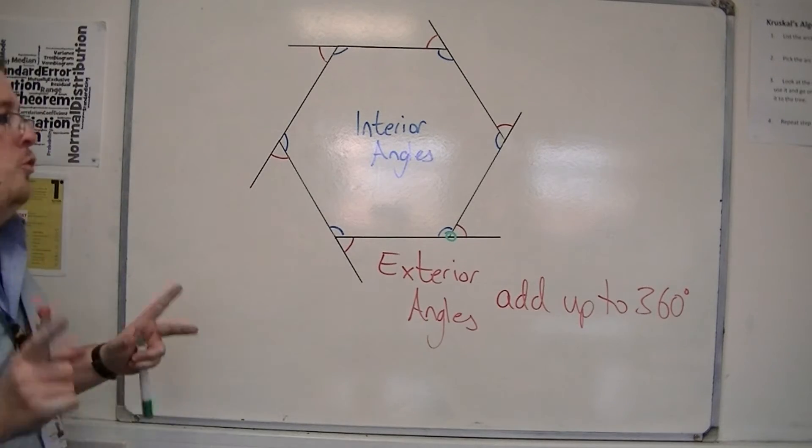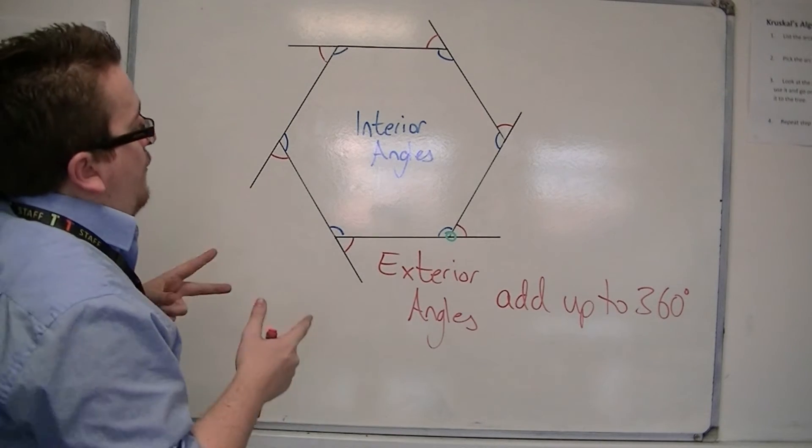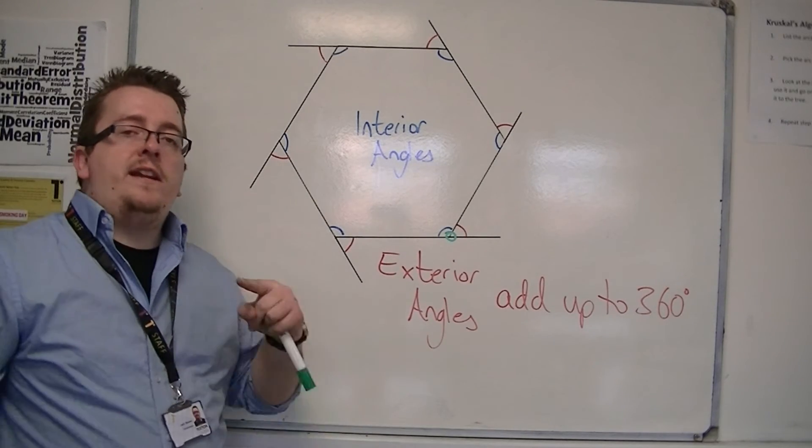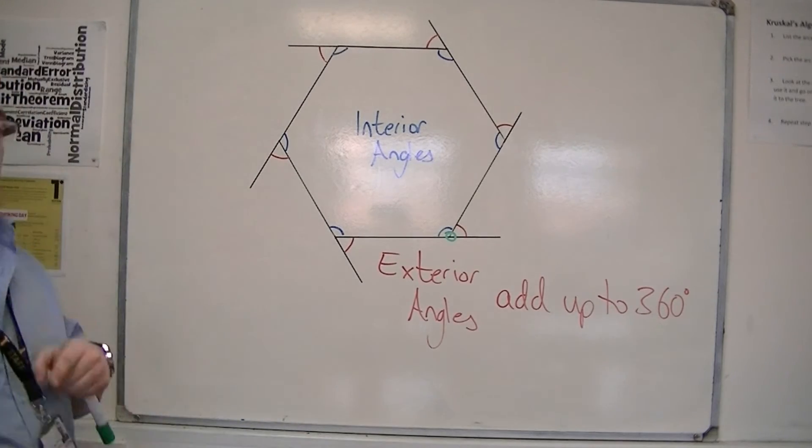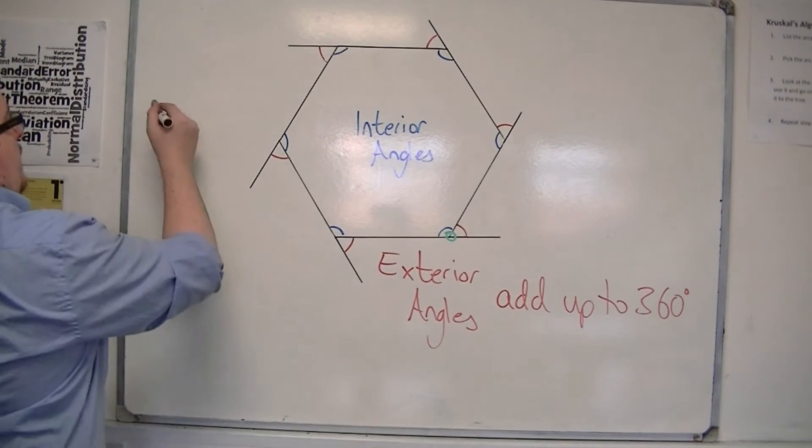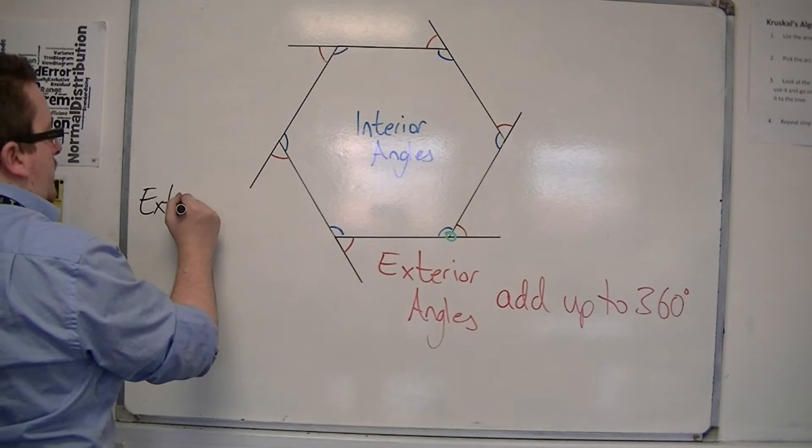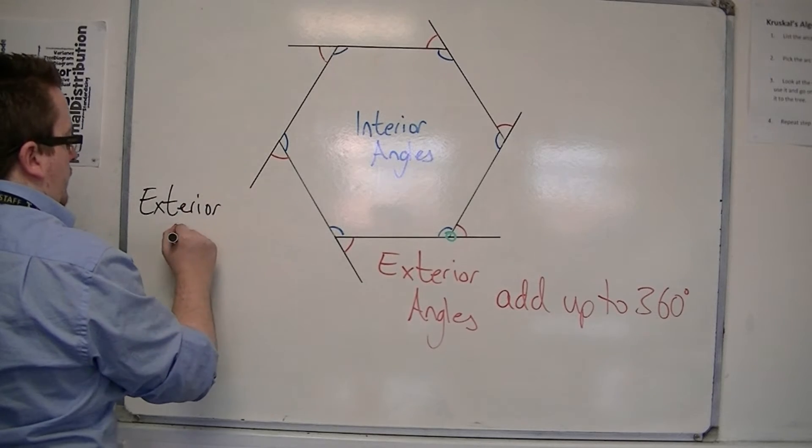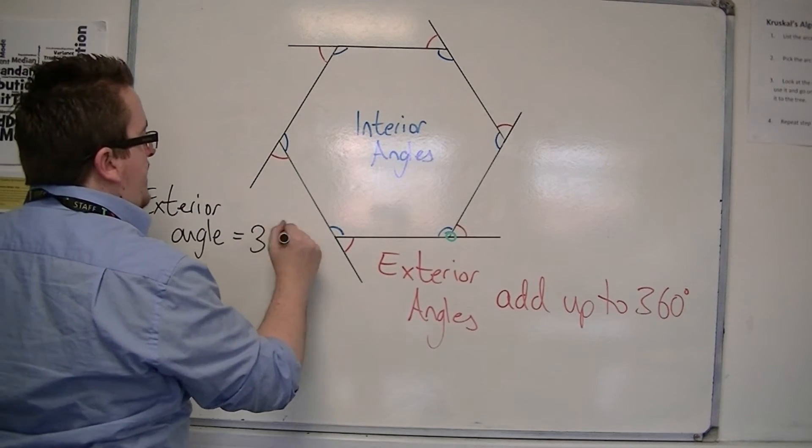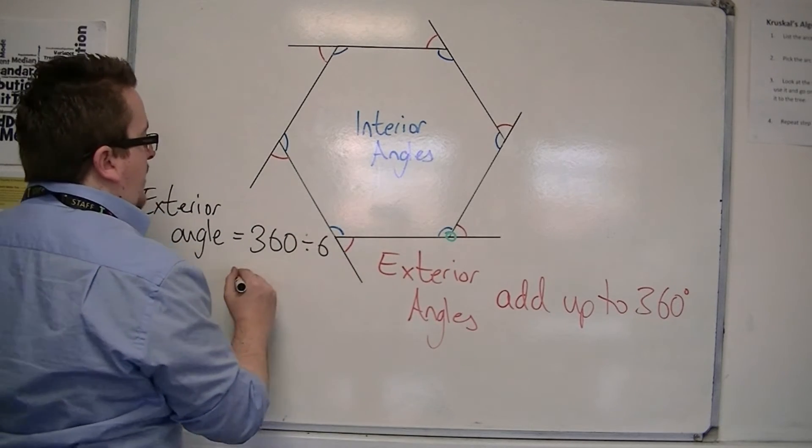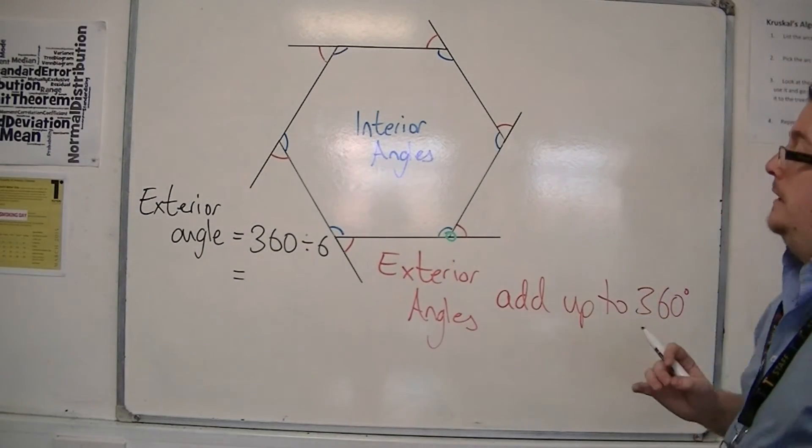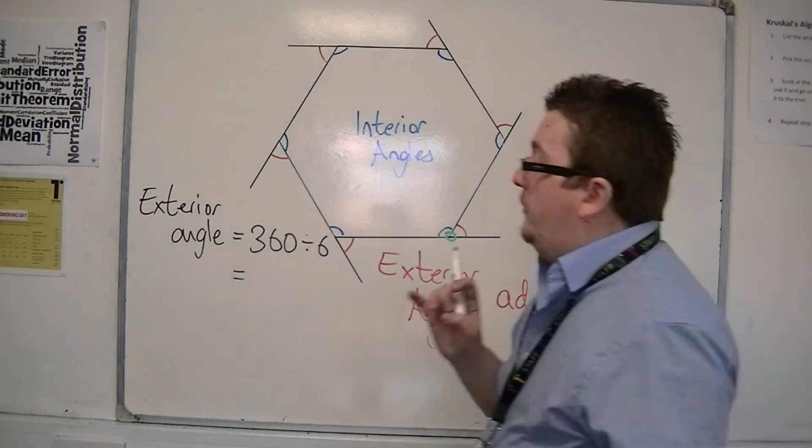So that opens up the fact that if all of those red angles, the exterior angles, add up to 360 degrees, I can then very easily work out what each one of them must be equal to. So the exterior angles for a hexagon like this must be 360 degrees divided by 6. Because this is a regular hexagon, each one of those exterior angles will be the same angle. So 360 divided by 6 would be 60 degrees.